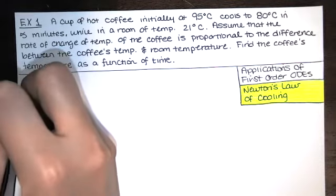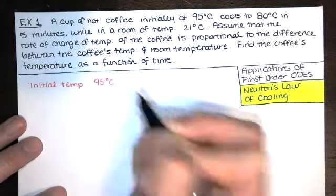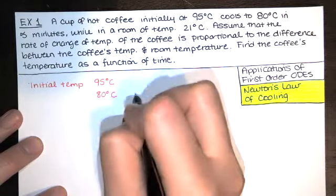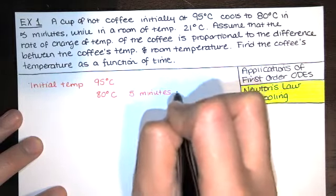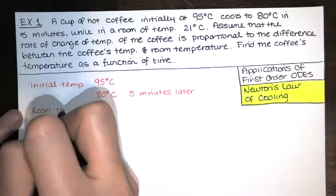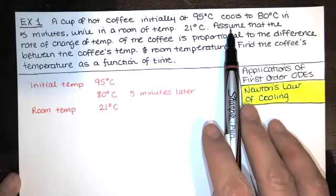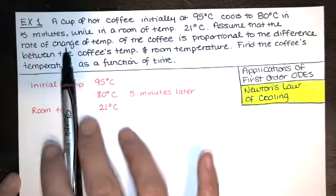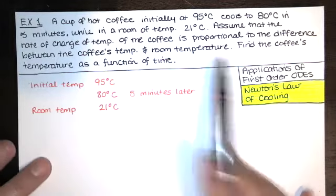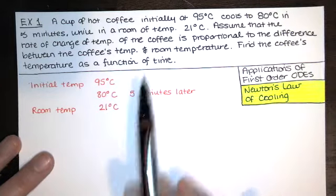Let's write this all down. We've got an initial temperature of 95 degrees Celsius. Five minutes later it's 80 degrees Celsius. The surrounding room temperature is 21 degrees Celsius. The problem statement says to assume that the rate of change of temperature of the coffee is proportional to the difference between the coffee's temperature and room temperature. We're going to translate that sentence into a differential equation, and we're asked to find the coffee's temperature as a function of time.